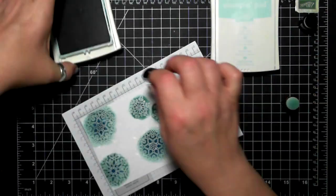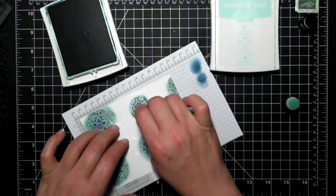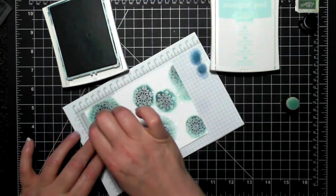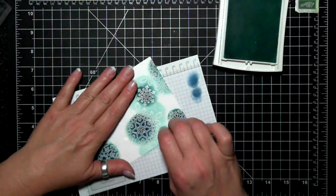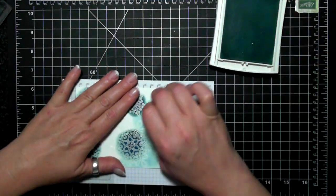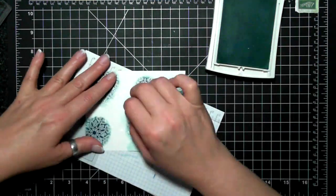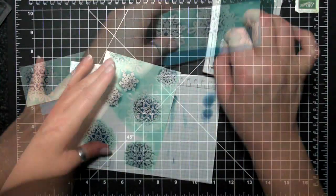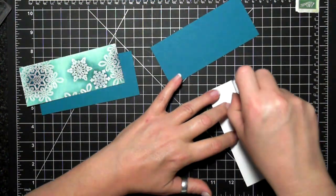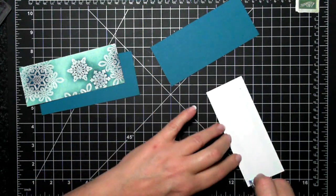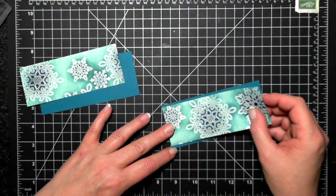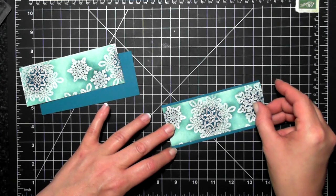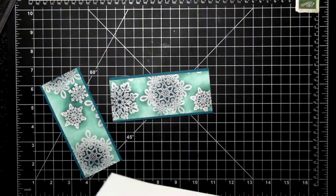I am inking with my dauber Soft Sky, Lost Lagoon, and Island Indigo. I started with the darkest in the center, so Island Indigo, then to the edges Lost Lagoon, and then in between each of the snowflakes I have put Soft Sky. So I am really heavily inking it and I go back and forth to try a really nice blend. Doesn't matter if it looks splotchy because I'm cutting it down into strips anyway.